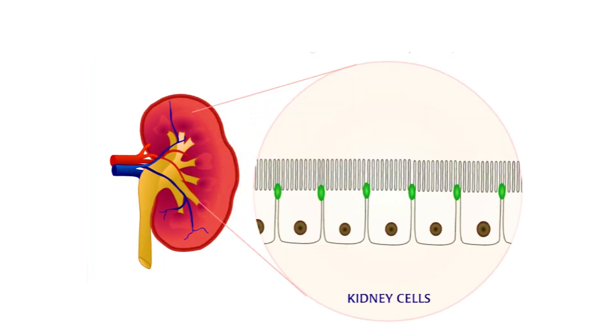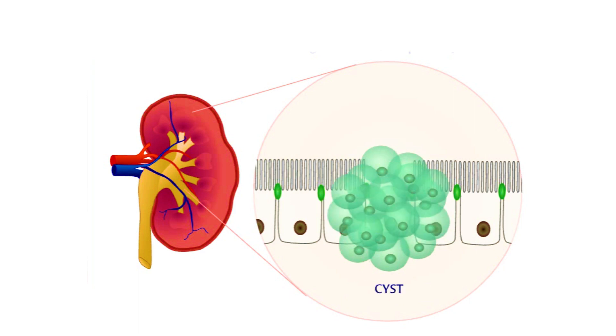Some fraction of the kidney cells may acquire a mutation in the other copy of the gene. Kidney cells with two mutated copies of PKD1 or PKD2 genes will develop into cysts.